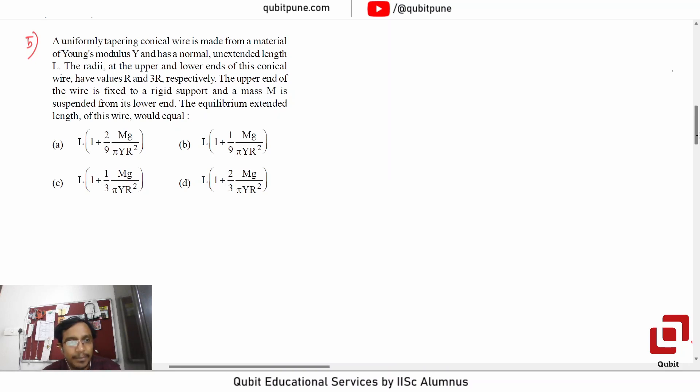So all options have capital L into 1 plus something, and that something is mg upon pi Y R squared in every term. The only difference being the constants: 2 by 9, 1 by 9, 1 by 3, and 2 by 3.